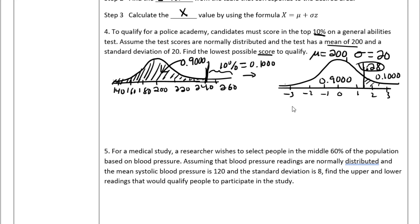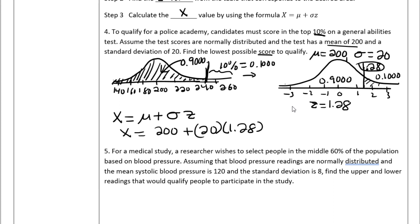Now that we have z equals 1.28, we use the formula x equals mu plus sigma times z: x equals 200 plus 20 times 1.28, which gives approximately 225.6. That is the lowest possible score needed to qualify for the police academy — you must score at least 225.6 or higher to be in the top 10 percent.